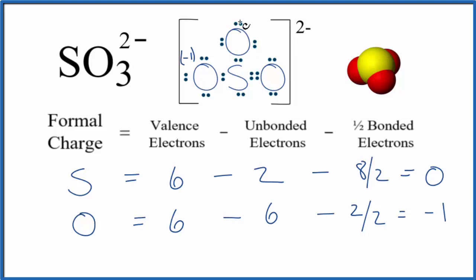We end up with six minus six, that gives us zero, minus one. We have a minus one formal charge here for this oxygen. And since this is the same here, just a single bond, minus one as well.